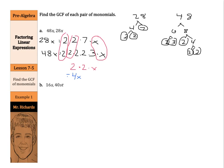What about 16s and 40st? Let's try something slightly different here. If we look at our 16, we have 4 times 4, and each of our 4s splits into 2 and 2. This method involves Venn diagrams. With my 16, I have 2, 2, 2, 2, and don't forget your s.